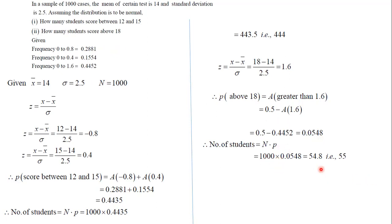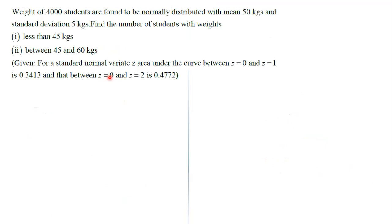In a similar way, if suppose we have a condition here, less than condition, between 45 and 60, and the value of 0 to 1 and 0 to 2 is given to us, frequencies are given.